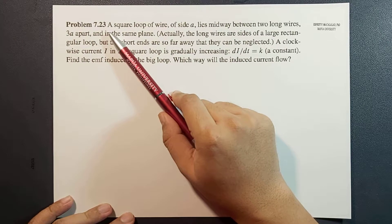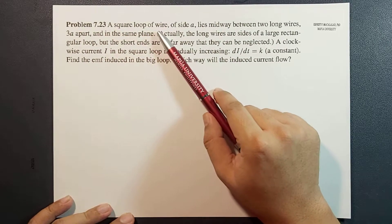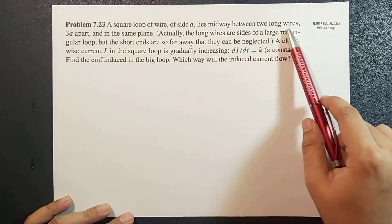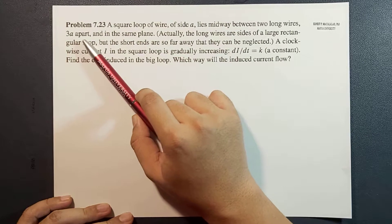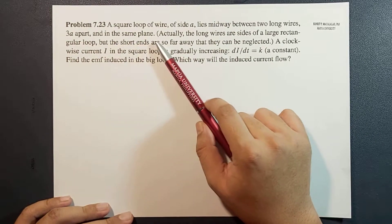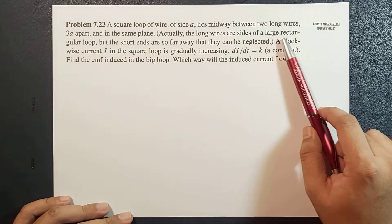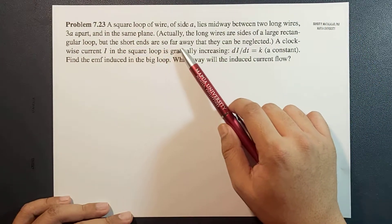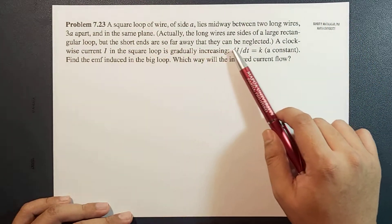The problem reads: A square loop of wire of side A lies midway between two long wires, three A apart, in the same plane. Actually, the long wires are sides of a large rectangular loop, but the short ends are so far away that they can be neglected.